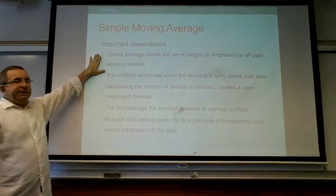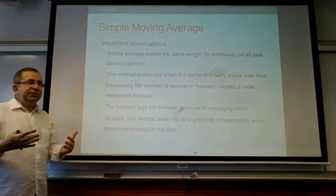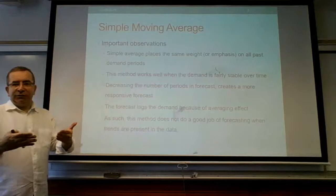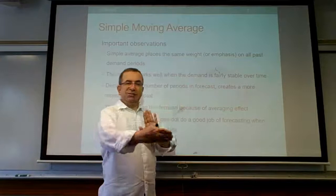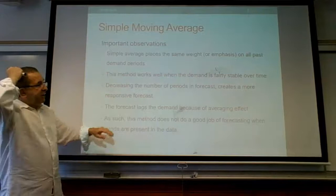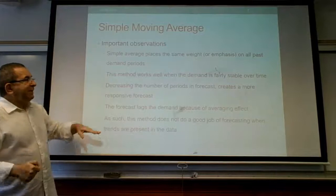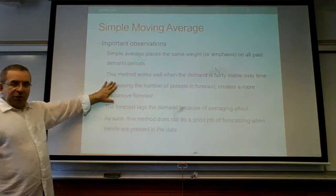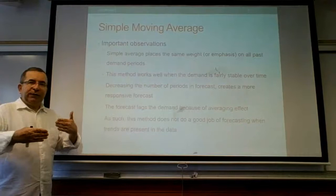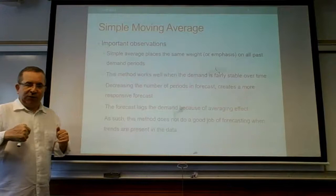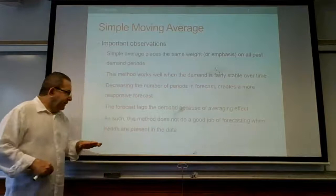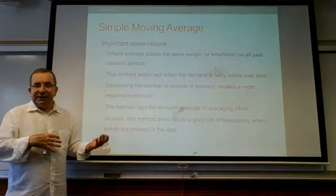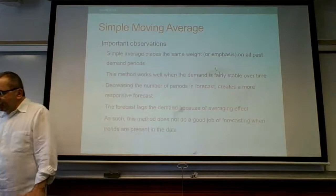Simple moving average treats all previous periods equally — in mathematical terms, you apply the same weight to each previous period. This method works well when demand is fairly stable over time, with a constant level. Using a lower or higher N affects how flat or fluctuating the forecast is. You should not use this method when there is trend or seasonality in the data.